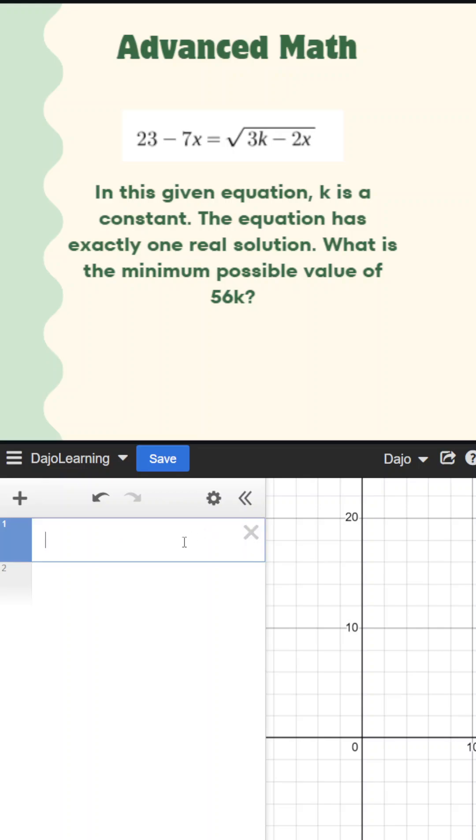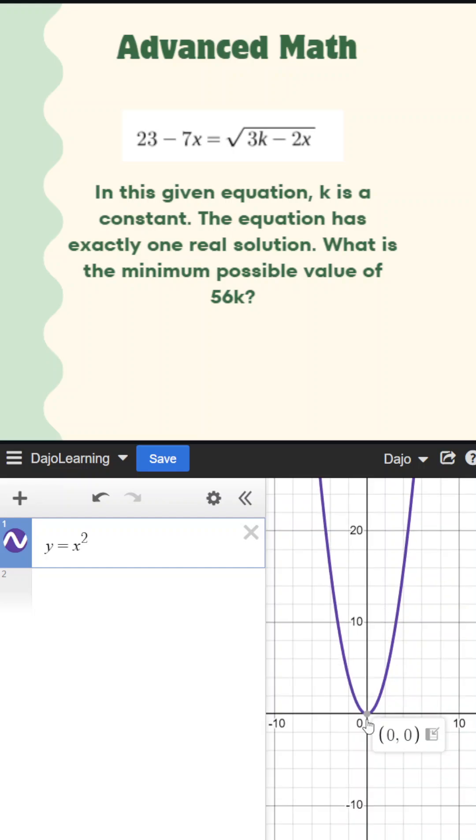Now, I want you to understand what one real solution actually means. When we're referring to solution in this case, we're actually talking about x-intercepts. What is an x-intercept? Well, it's really just any point that has a y value of zero. So in this case, our x-intercept would be (0, 0).